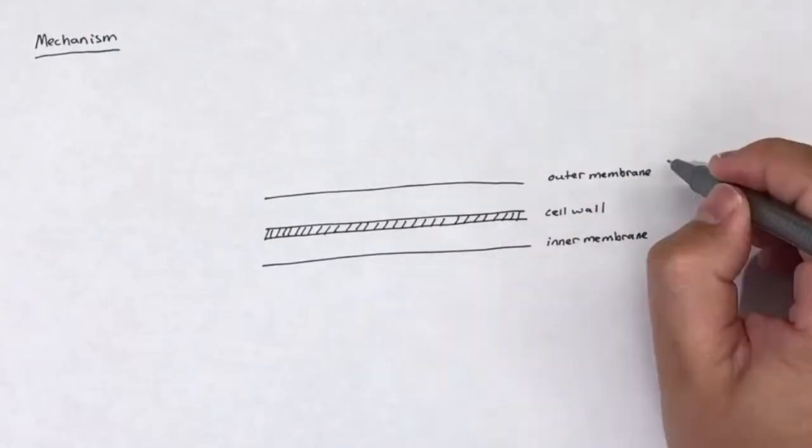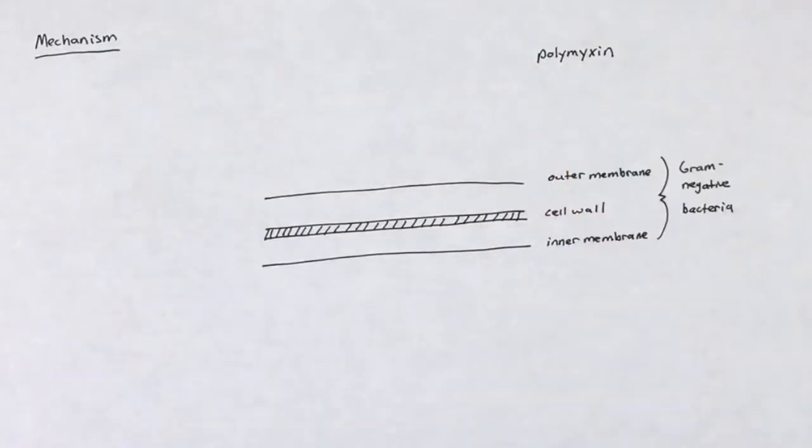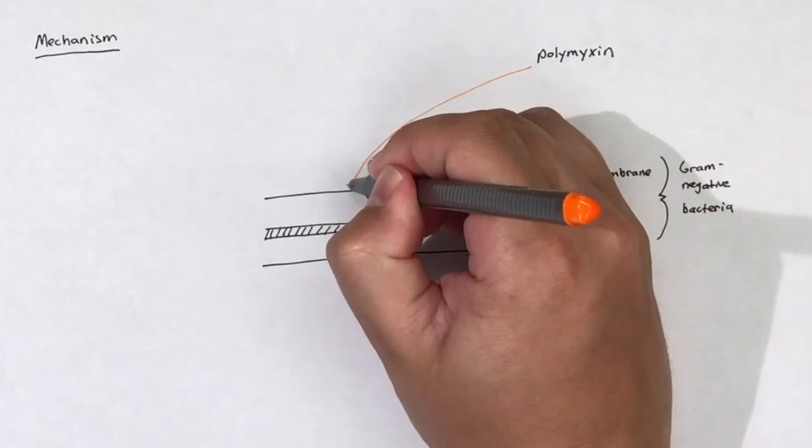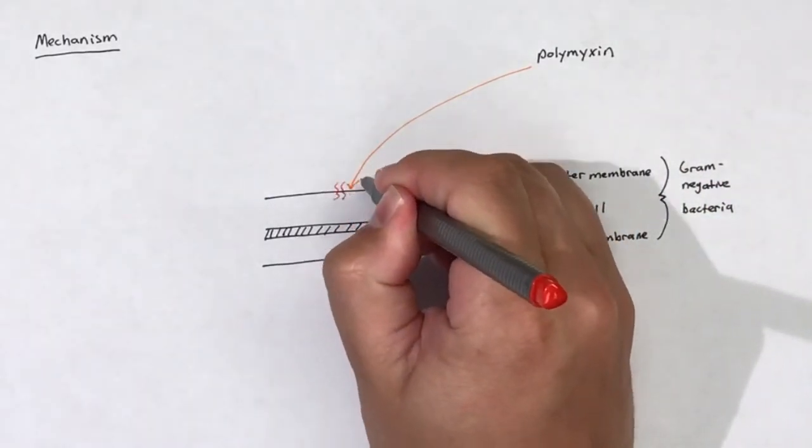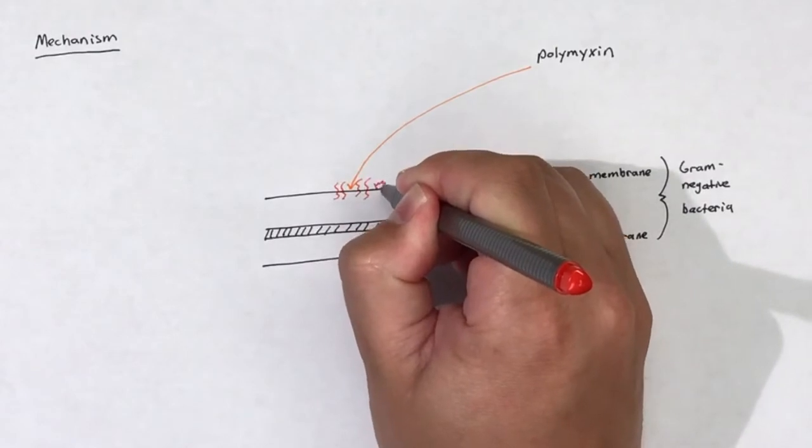Polymyxins act at the surface of gram negative bacteria to disrupt the membrane. Biochemically, polymyxins are simple basic peptides that act as cationic detergents due to their amphipathic properties.